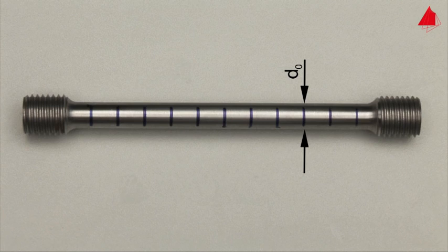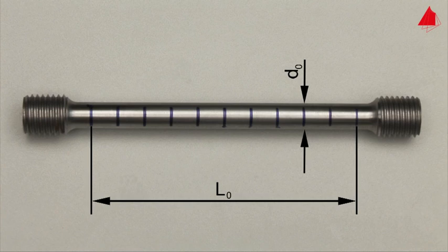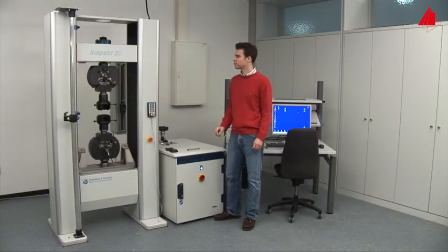The test piece has an original gauge length of 100 millimeters. Within this test region, distance marks have been drawn at regular intervals. They help to visualize and measure the plastic behavior of the specimen.